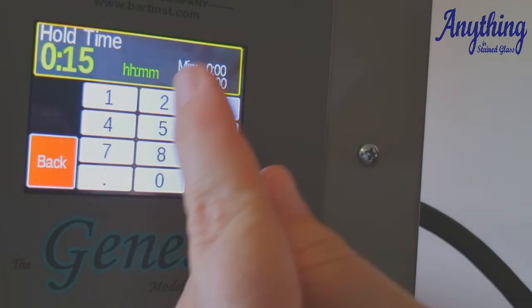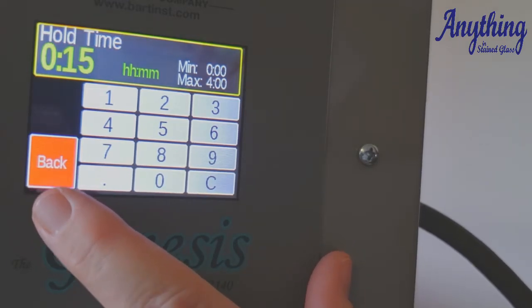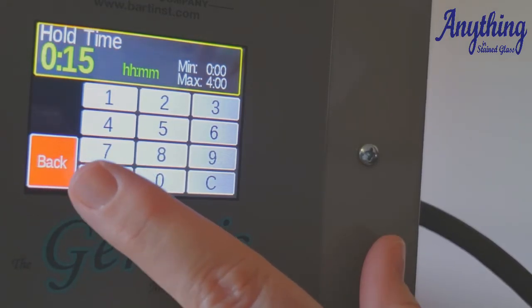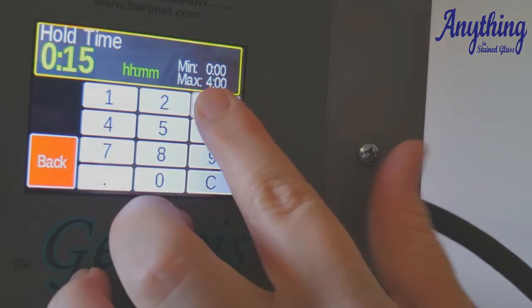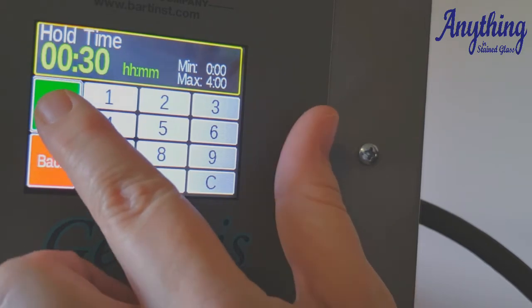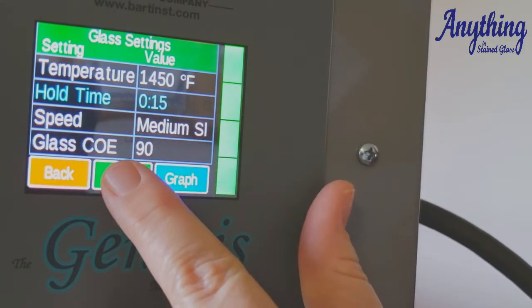Hours are to the left, minutes are to the right. Numbers are literal, and you have a maximum of four hours hold time available to program into this controller for each segment. So we're going to hold it for let's say 30 minutes.